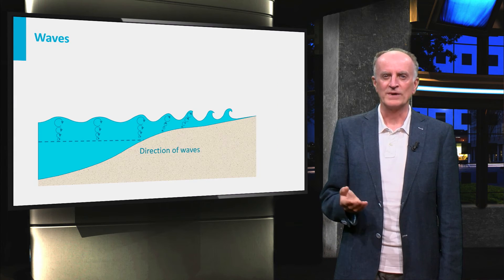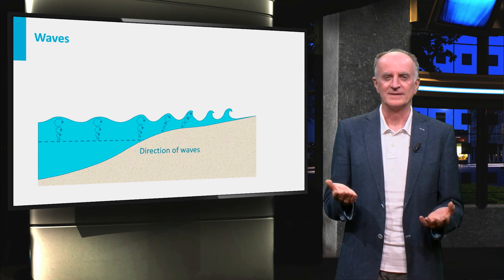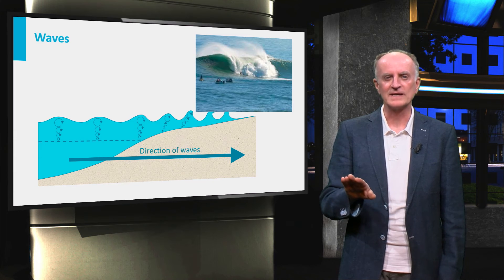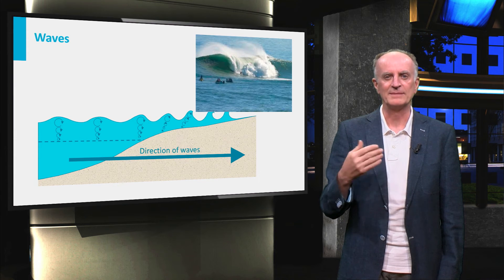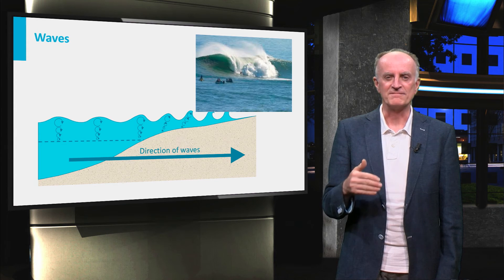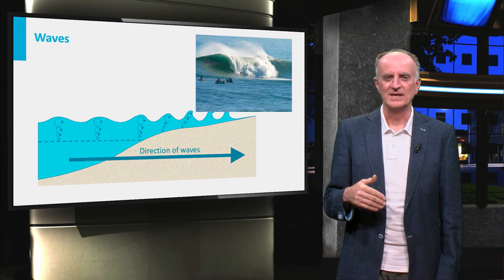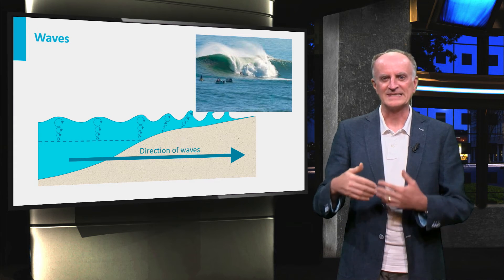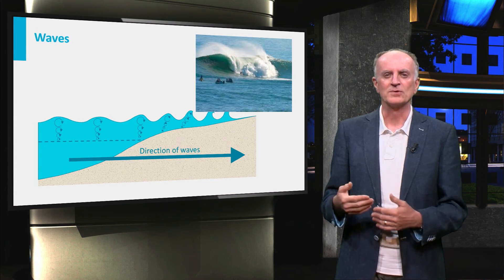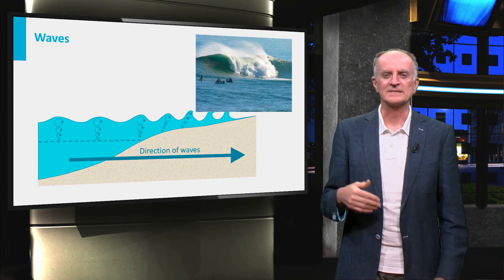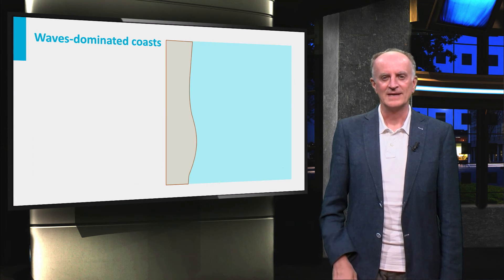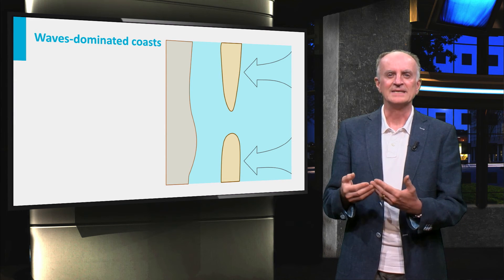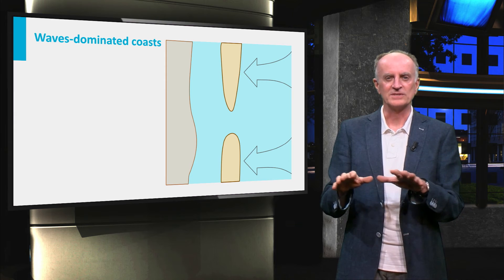Coasts in which waves are much stronger than tides look very different. Waves break when the seafloor shallows to less than half of the wavelength of the incoming wave. The breaking of the wave is a very high-energy process which mobilizes large amounts of sediments, which are then transported and dumped in linear features along the coast as the water slows down and comes to a standstill. In map view, you can see the waves breaking and depositing sands in sandbanks and slowing down as they reach the coast.